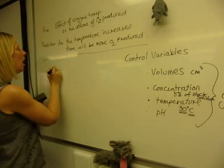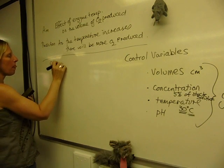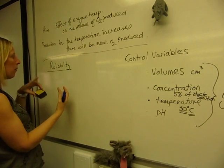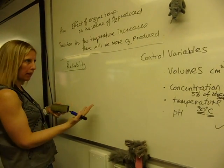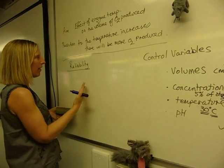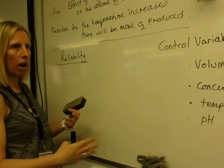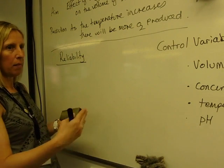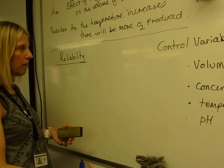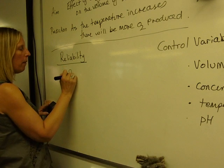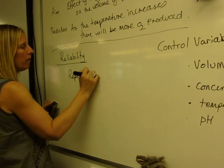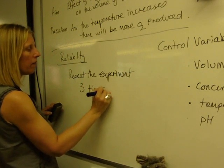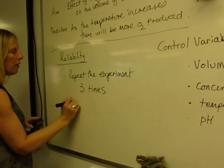From the control variables, then we talk about reliability. And you may have heard this spoken about in different ways. Reliability, repeatability, replicability. They're all the same thing. If something's reliable, it happens in the same way every time. So the more times you test it, and the more times you come up with the same reading, the more reliable it is. So what we say is that we repeat the experiment three times. And that's the first thing. Then we calculate a mean.